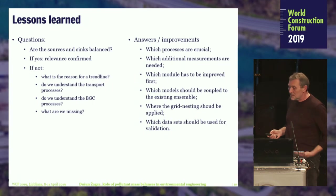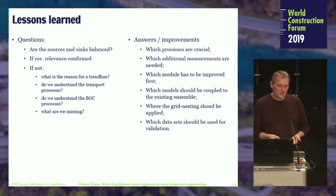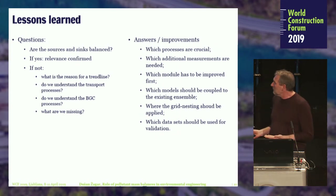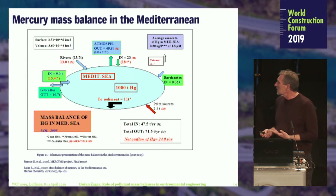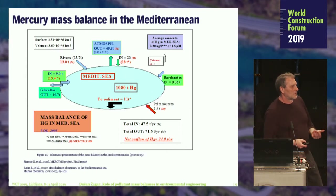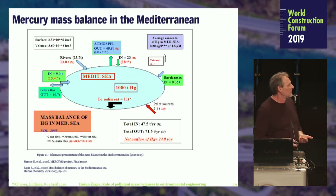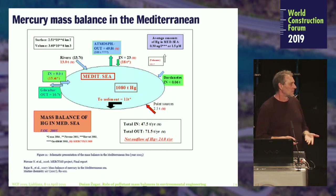What needs to be asked when you perform a mass balance? First of all, are the sources and sinks balanced? If yes, then the relevance of the measurements and models is confirmed. If not, we have to ask ourselves why. Why do we have a trend line in concentrations? When the concentration is decreasing, for example — looking at this mass balance — a net outflow of 24 tons per year would mean that mercury concentrations are decreasing by 2.2% per year. If it goes exponentially, in 50 years there would be no more mercury problem in the Mediterranean, and we could forget about new legislation. But this is not correct, because we know this is more or less impossible — there are also natural sources, so it is more or less in equilibrium.